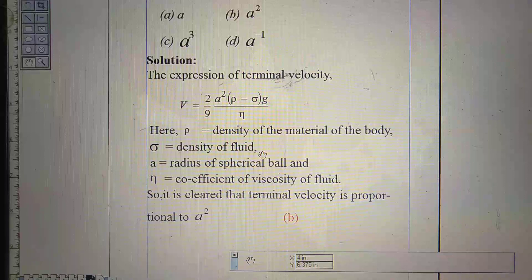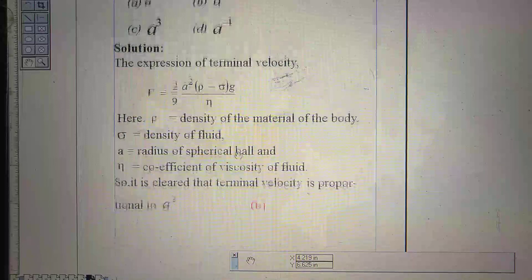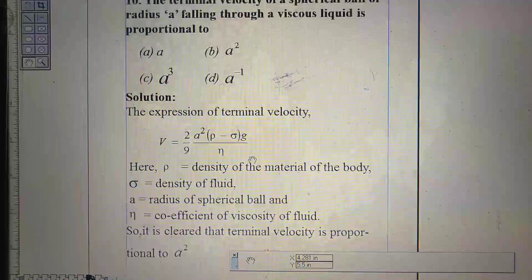From this expression, it is very clear that terminal velocity is directly proportional to A square. The right option is B, that is, square of the radius.